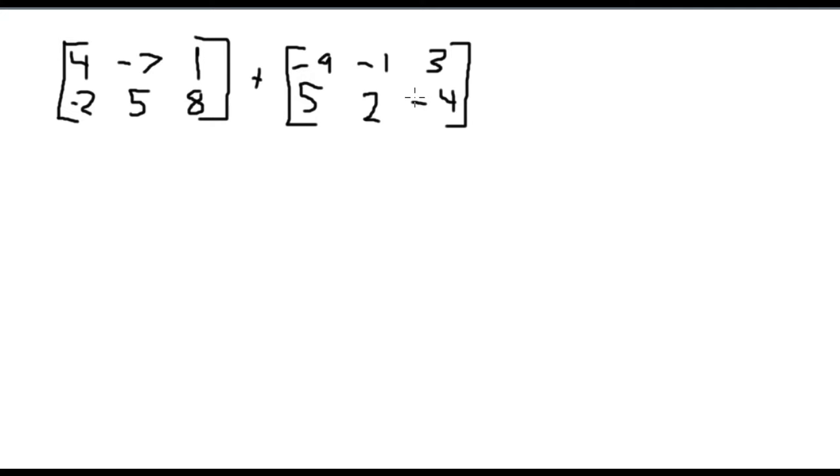Now it's actually really easy to do this. All you've got to do is you add this number with the same number over here. So you would add these two numbers together, then you would add these two numbers together, this one and this one. And you just keep on going all the way down the line. And that's how you do it. So let's start making our new matrix.